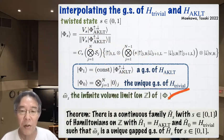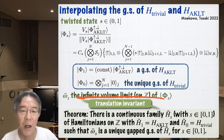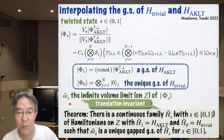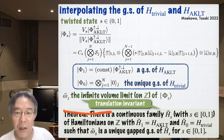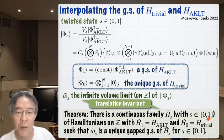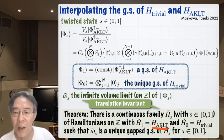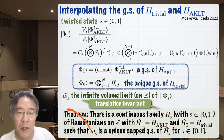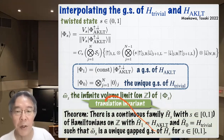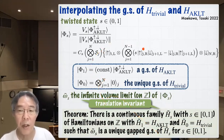Going to the infinite volume limit on the infinite chain, denoted omega-tilde_s, and using the theory of matrix product states, I can show that there is a continuous family of Hamiltonians H-tilde_s (s ∈ [0,1]) on the infinite chain interpolating between the AKLT Hamiltonian and the trivial Hamiltonian, with omega-tilde_s as their unique gapped ground state. Of course, this Hamiltonian does not preserve the Z2 × Z2 symmetry — that is the point.